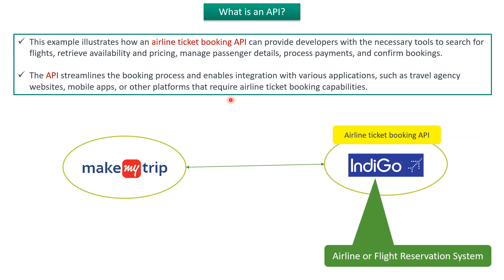This example illustrates how an airline ticket booking API can provide developers with the necessary tools to search for flights, retrieve availability and pricing, manage passenger details, process payments, and confirm bookings. The API streamlines the booking process and enables integration with various applications like travel agency websites, mobile applications, or any other platform that requires airline ticket booking capabilities.